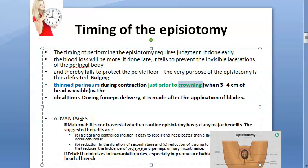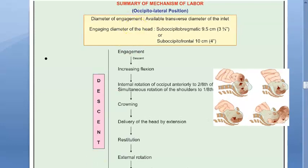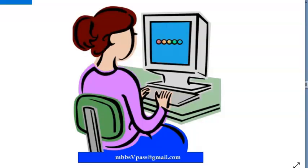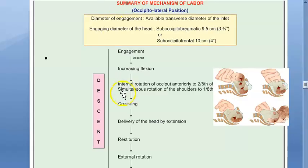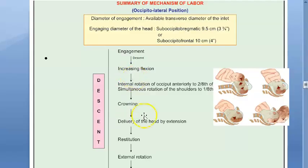You need to know what comes before crowning so you can recognize that crowning is the next step. In the mechanism of labor video, you have seen that before crowning there is internal rotation of the occiput, rotation of shoulders, and internal rotation — then crowning. Also note that crowning refers to the presenting part, not just the baby's head — this matters in, for example, a breech delivery.